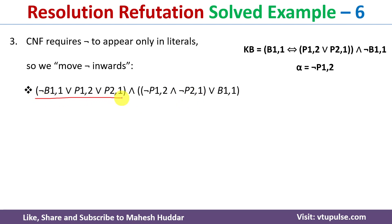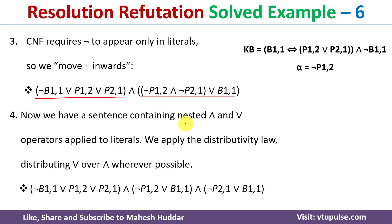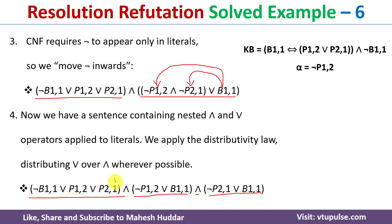Now there is an issue with this clause because we have AND connectivity inside a clause, which is not allowed. We use the distributive law: distribute B11 over (negation of P1,2) AND (negation of P2,1). This gives us two clauses: (negation of P1,2 OR B11) AND (negation of P2,1 OR B11). So totally we get three clauses, each connected by AND, with OR within each clause — this is CNF.